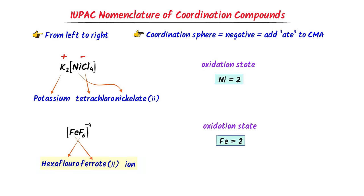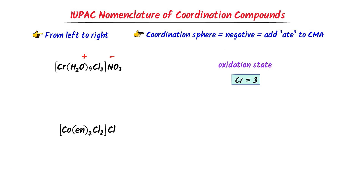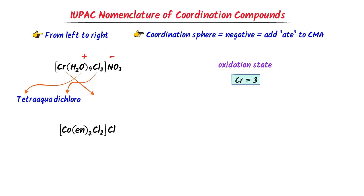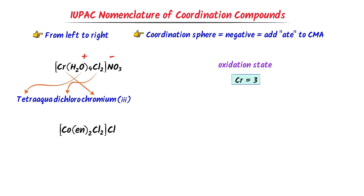Now consider these coordination compounds. As usual, I write positive charge and negative charge. After calculation, the oxidation state of chromium is 3. In the coordination sphere, there are two ligands: water and chlorine ion. According to alphabetical order, I write 'aqua' first then 'chloro'. There are four molecules of water, so I write 'tetraaqua'. There are two molecules of chlorine, so I write 'dichloro'. The central metal atom is chromium, and the charge on the coordination sphere is positive, so I only write 'chromium'. The oxidation state of chromium is 3. For the NO3 counter ion, I write 'nitrate'. Thus I get 'tetraaquadichloro chromium(3) nitrate'.